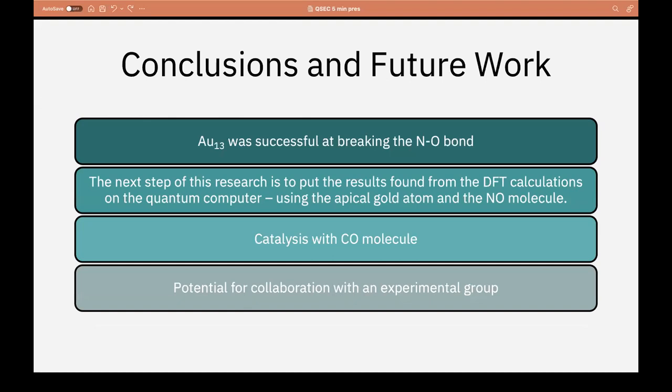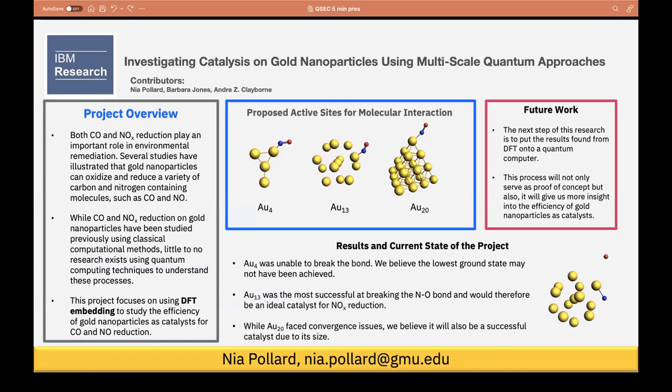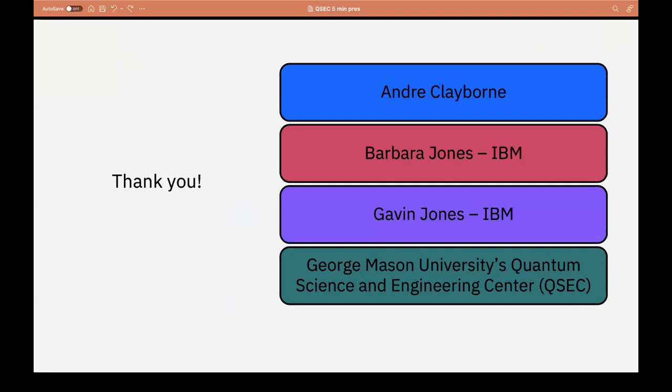So just to reiterate what I mentioned today. So far we found that one of the studied systems, GOLD13, was successful as a catalyst, and therefore we will be analyzing this system on the quantum computer. We hope to repeat this process with carbon monoxide and also test other 13 atom metal clusters. This project also opens up a potential for collaboration with experimental groups. This research is very exciting and, in my opinion, very promising. This project is a proof of concept study that shows how quantum DFT embedding can be used for larger systems such as gold nanoparticles. It will also give us insight into the efficiency of gold nanoparticles as catalysts. Unfortunately, I couldn't go into too much detail today, but definitely feel free to reach out to me if you guys have any questions. And a brief thank you to everyone that's here, my advisor and my advisors at IBM. And of course, thank you to QSEC.